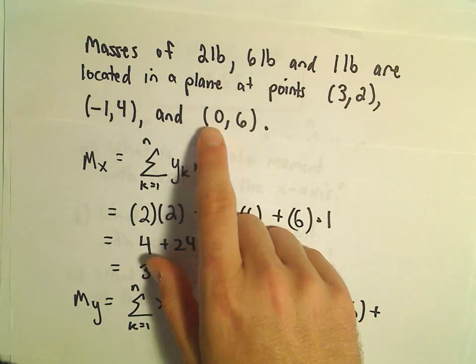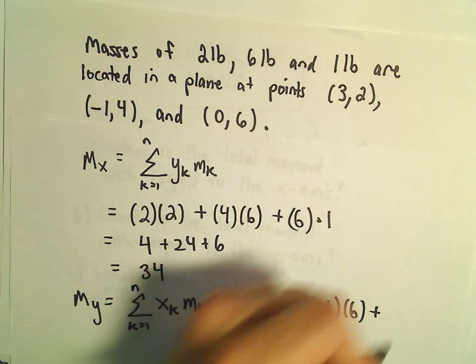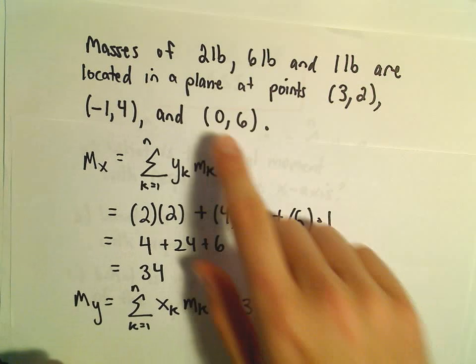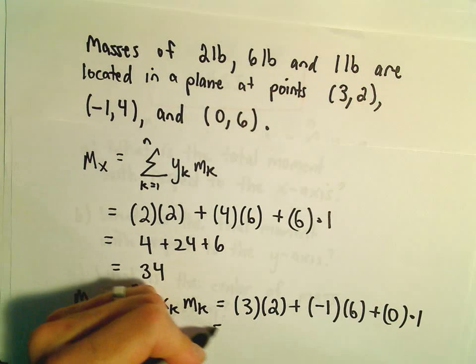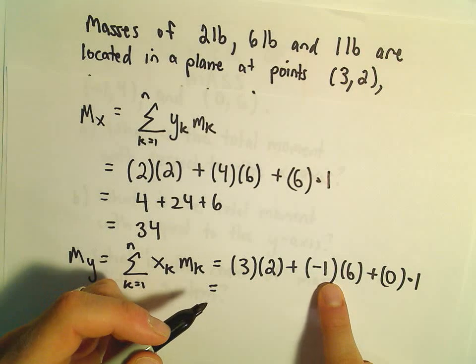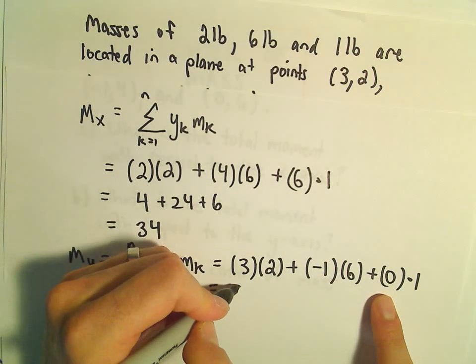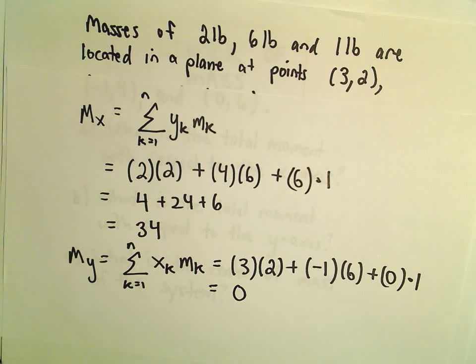And then we'll take the last point, which has the x-coordinate of 0. We'll multiply that by its weight, which is 1. So in this case it looks like we get 6 minus 6, which is 0 plus 0. We're getting the value 0.